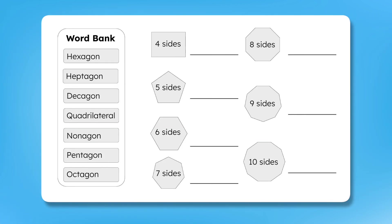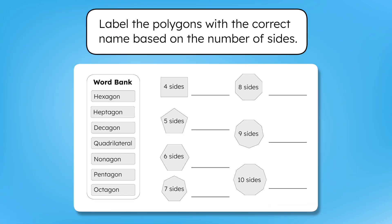Check out these other shapes. Label as many of these polygons as you can with the correct name, based on the number of sides. You can also use the word bank to help with your thinking. If there are any you're not sure about, that's totally okay — we'll review them together after the pause. Pause the video here and record your thinking in your guided notes.